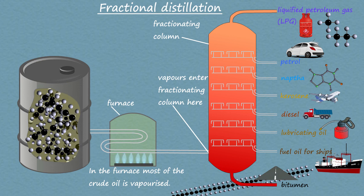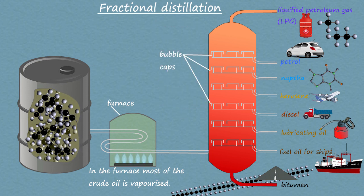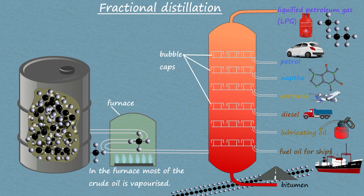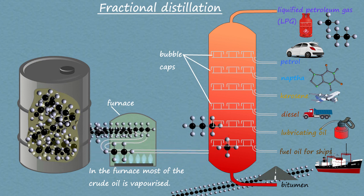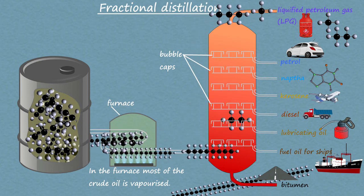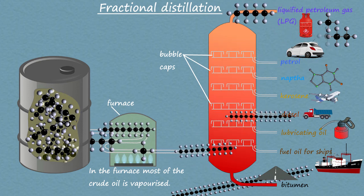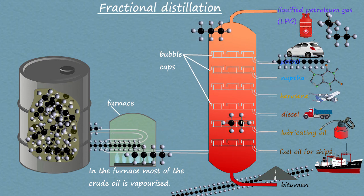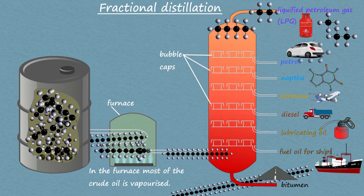Inside the fractionating column are a series of bubble caps. These look a little like chimney pots. Each of these layers of bubble caps is at a slightly different temperature. The bubble caps get cooler the higher they are in the fractionating column. The hot vapours from the furnace enter the fractionating column and begin to rise up the column. The vapours will rise until they meet a bubble cap cooler than their boiling point. At this moment the vapours will then condense and turn back into liquids which are collected.